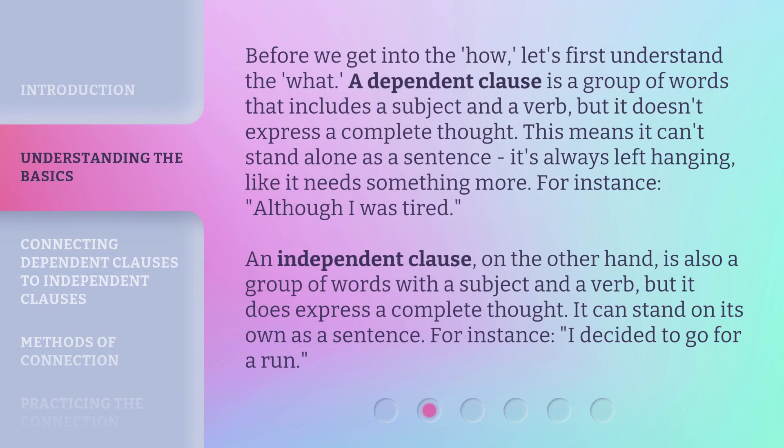Before we get into the how, let's first understand the what. A dependent clause is a group of words that includes a subject and a verb, but it doesn't express a complete thought. This means it can't stand alone as a sentence — it's always left hanging, like it needs something more. For instance: 'Although I was tired.' An independent clause, on the other hand, is also a group of words with a subject and a verb, but it does express a complete thought. It can stand on its own as a sentence. For instance: 'I decided to go for a run.'